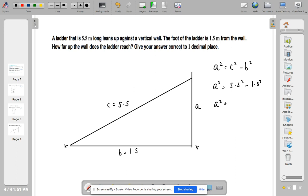A squared equals, okay, so 5.5 squared minus 1.5 squared. Let's work that out.